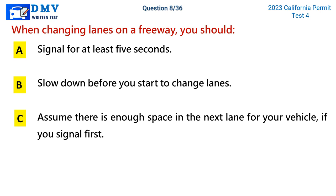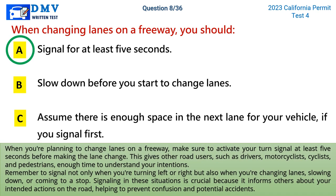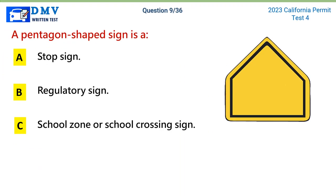Question 8: When changing lanes on a freeway you should. A) signal for at least 5 seconds, B) slow down before you start to change lanes, C) assume there is enough space in the next lane if you signal first. The correct answer is A. When planning to change lanes on a freeway, activate your turn signal at least 5 seconds before making the lane change. This gives other road users — drivers, motorcyclists, cyclists, and pedestrians — enough time to understand your intentions. Signal not only when turning but also when changing lanes, slowing down, or stopping.